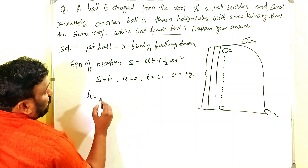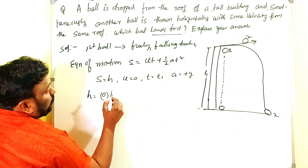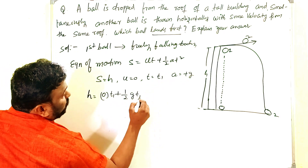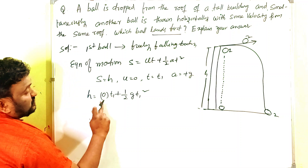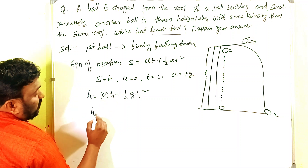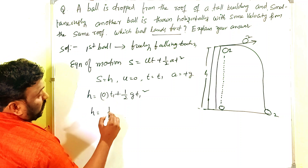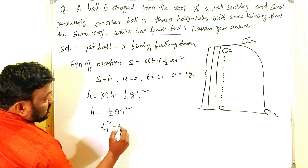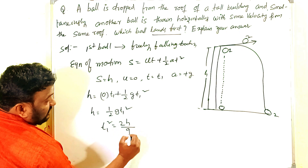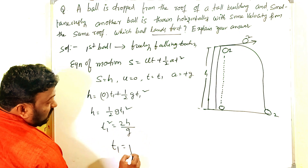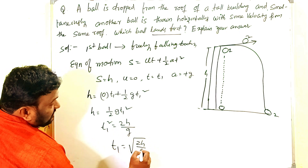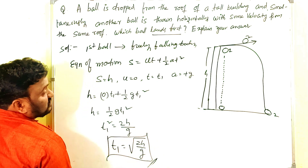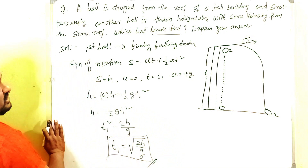Substituting: h = 0 × t₁ + ½ × g × t₁². So h = ½g·t₁². Therefore t₁² = 2h/g, and t₁ = √(2h/g). This is the time taken by the first ball to reach the ground.